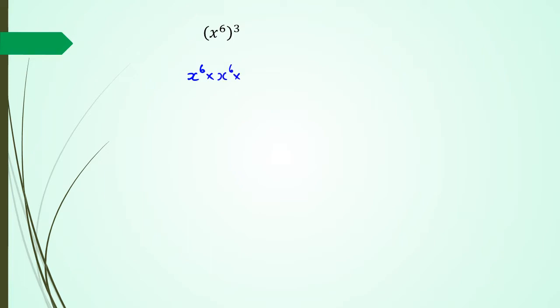We can rewrite x to the power of 6, to the power of 3, as x⁶ times x⁶ times x⁶, which gives us x to the power of 18. Or, the shortcut: x to the power of 6 times 3, which also gives x to the power of 18.